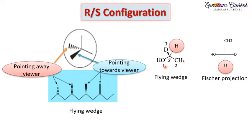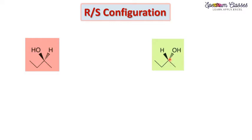If the group attached with the dashed line is the fourth priority group, and the clockwise rotation of the rest of the groups gives R — as we discussed in our previous video — we will apply the same concept here.